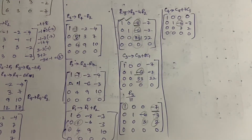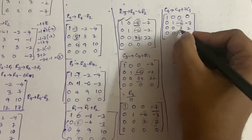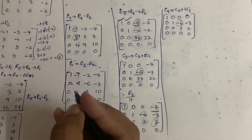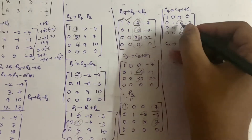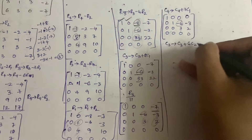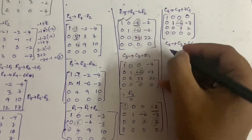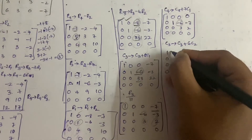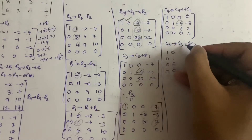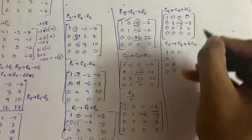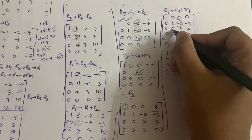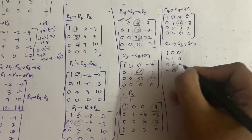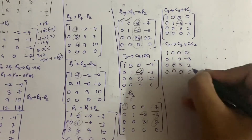Now we make minus 6 zero. Using C2 is better here. C3 becomes C3 plus 6·C2. The first two columns stay the same. C3: 0 + 6×0 = 0; minus 6 + 6×1 = 0; 3 + 6×0 = 3; zero stays. So the matrix now has zeros in the right places with 3 and 2 remaining on the diagonal.